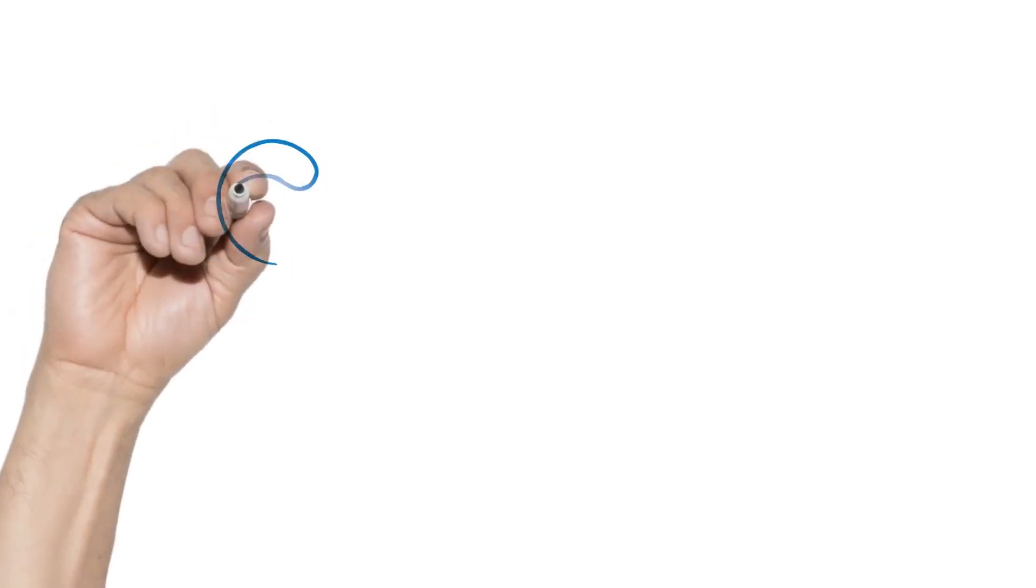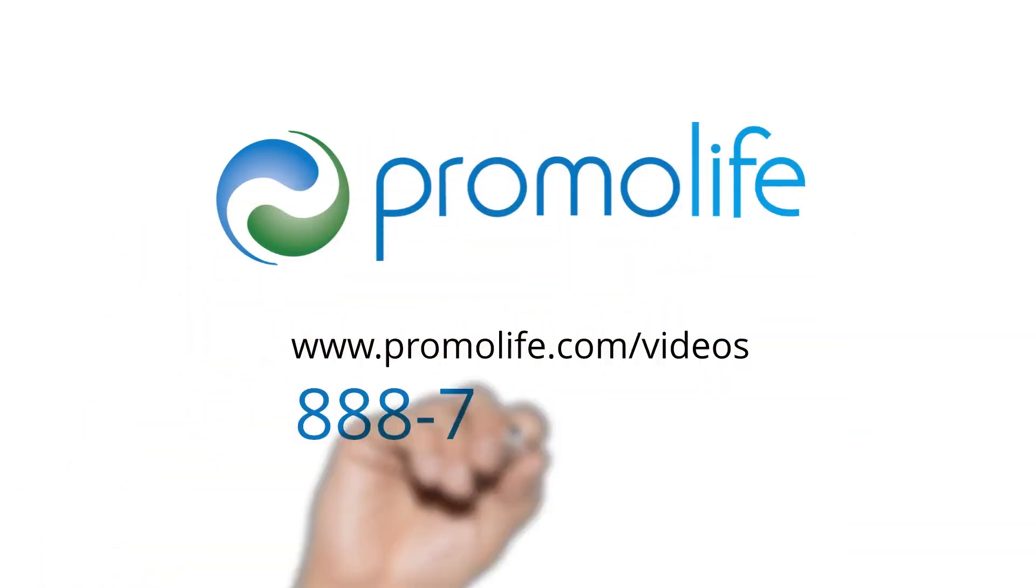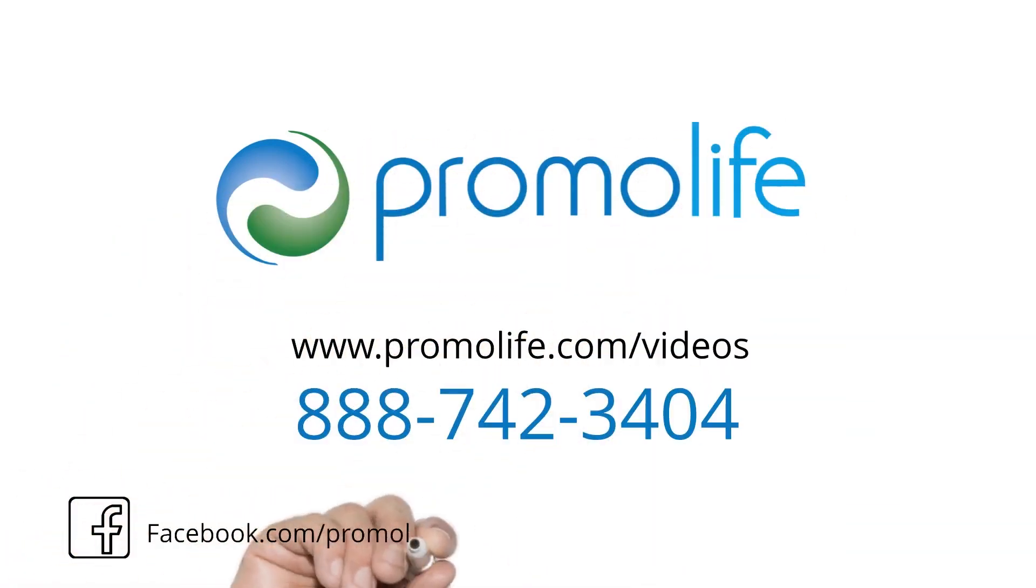If you do choose to use an ozone humidifier, you will first connect the humidifier to the generator and then connect the accessory or kit to an ozone destruct that is attached to the humidifier. To view how to set up our ozone humidifiers, please view this link. If you have any questions or require any other assistance on how to set up your vaginal insufflation kit, please call 888-742-3404.